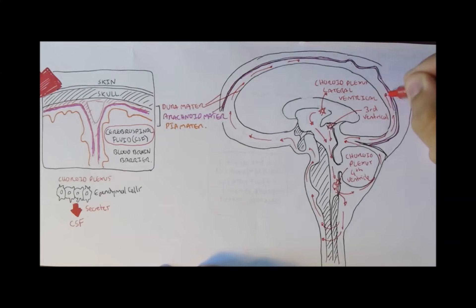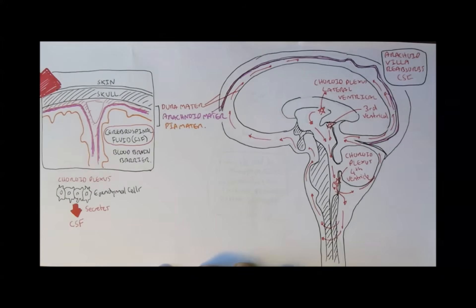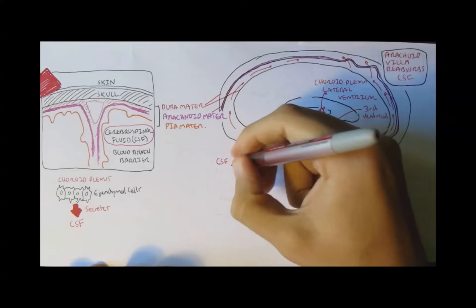Once the CSF goes to the top of the brain, it will be absorbed by the arachnoid villi, situated, remember, basically in the arachnoid mater, to be recycled.